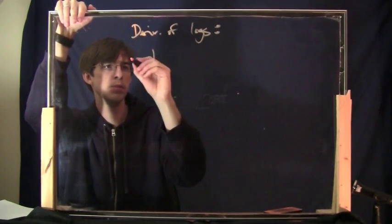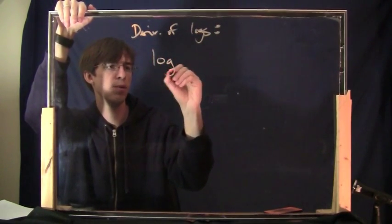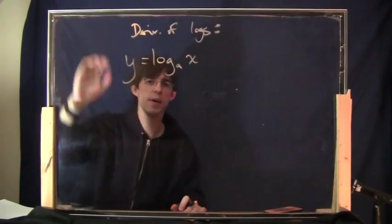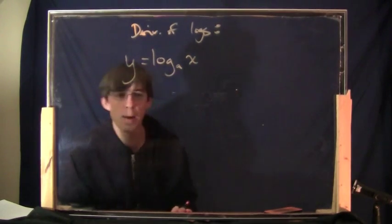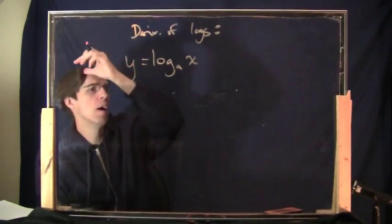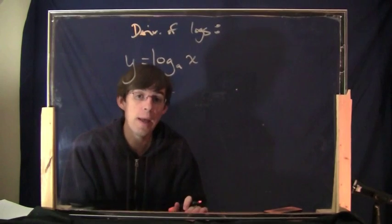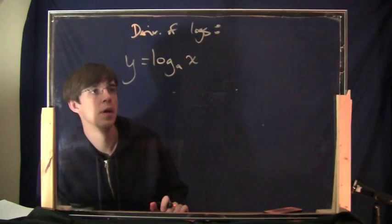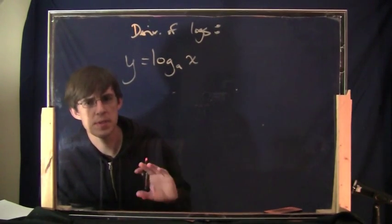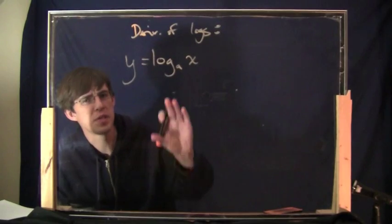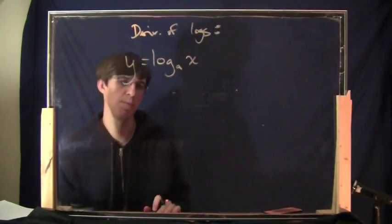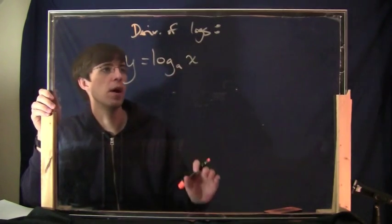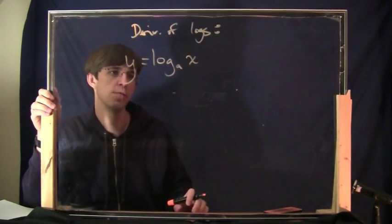Let's do the log with base a of x. Let's say this is going to be y, and I want to find the derivative, dy/dx, or y prime. I'm going to do this in a slightly weird way — this is actually something you'll learn more about if you go on to take more calculus. It's referred to as the implicit derivative. There's one step which is going to be a little strange, but this is where the derivative of logarithms comes from. We're going to end up with a nice formula.